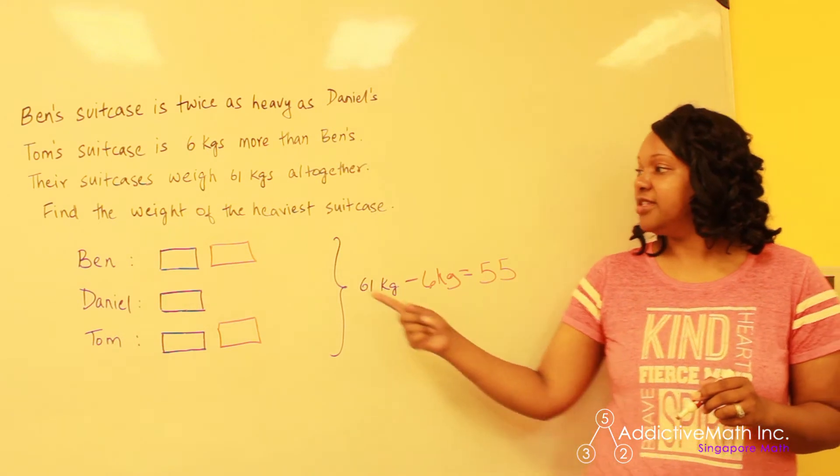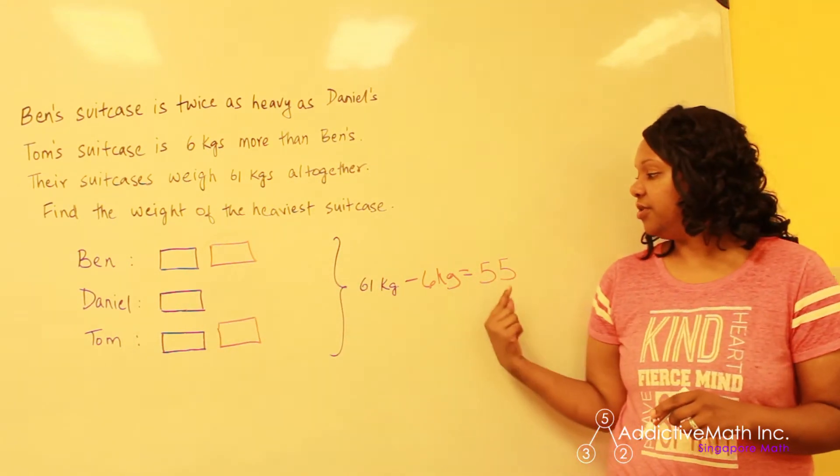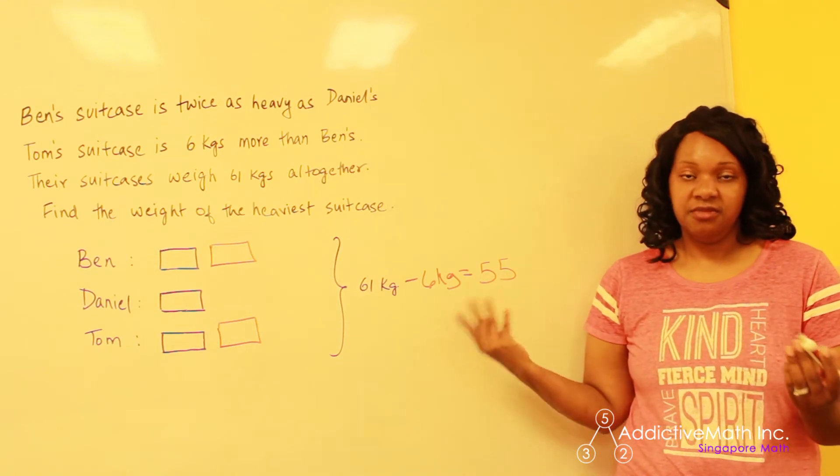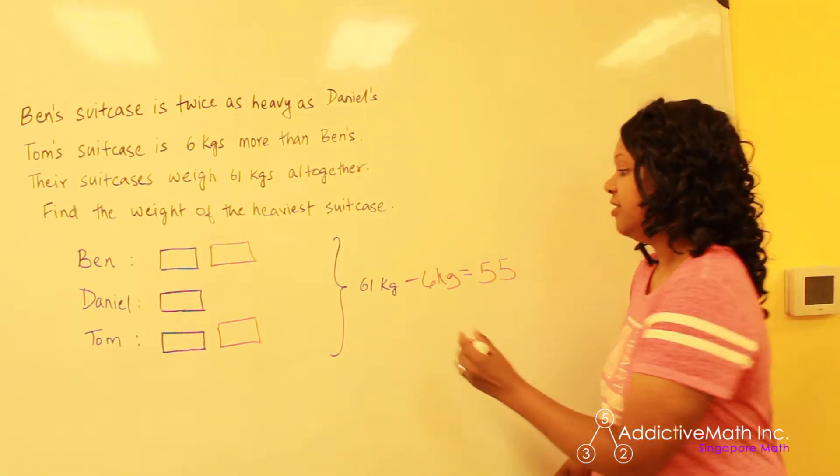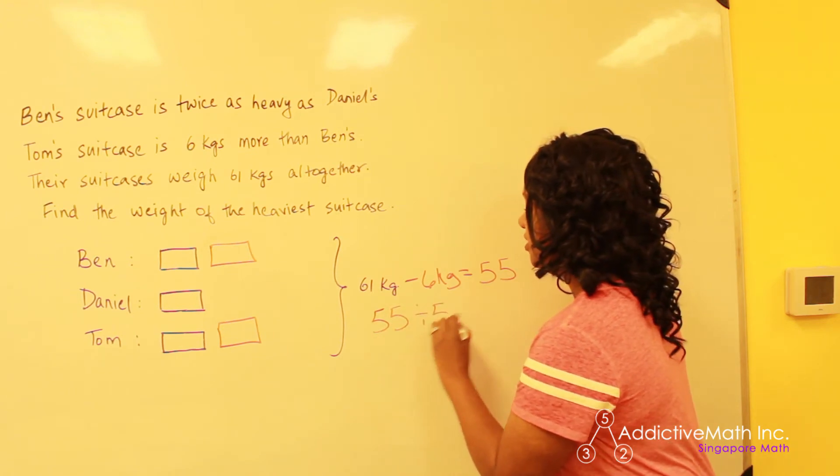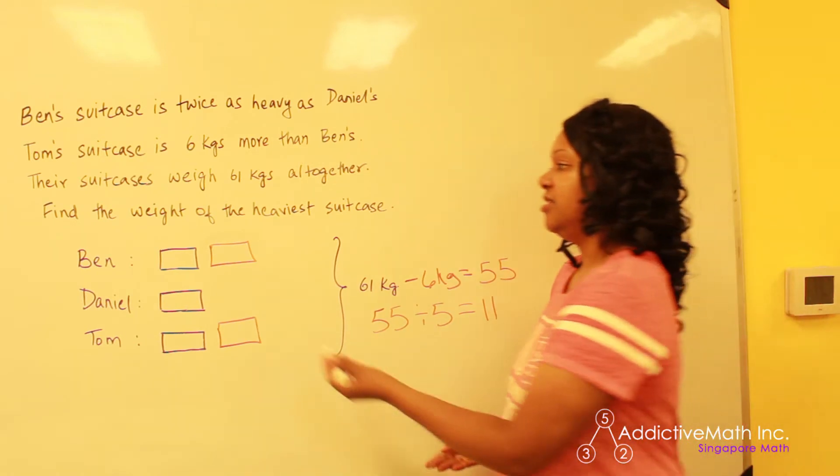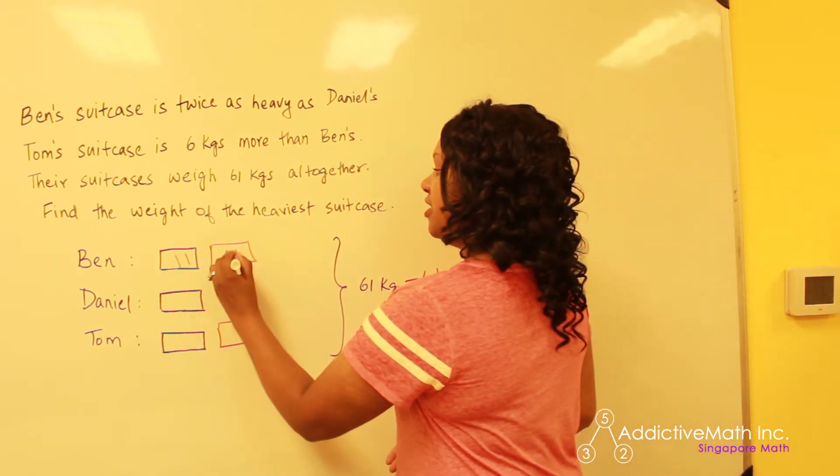You should get 61 minus six is 55. So what this is saying now is these five bars that are left should equal 55. Best way to get that is 55 divided by the five bars that are left gives you 11. So that tells us each of these are worth 11.